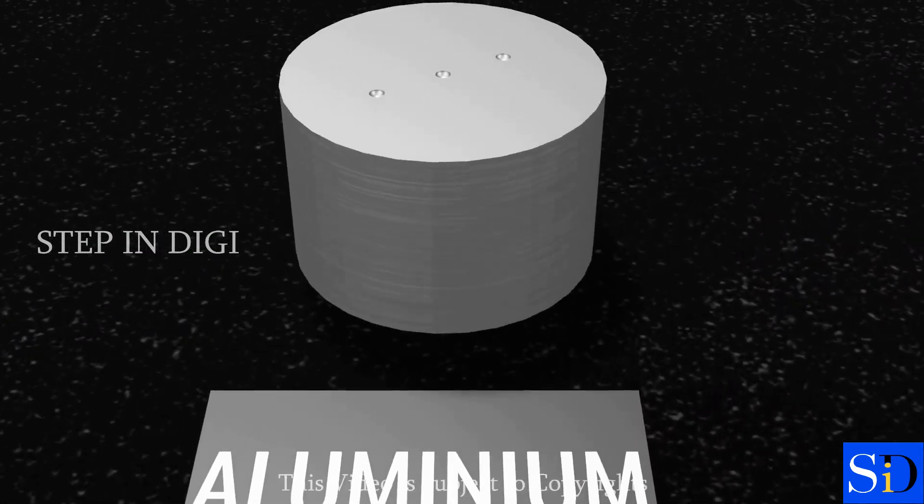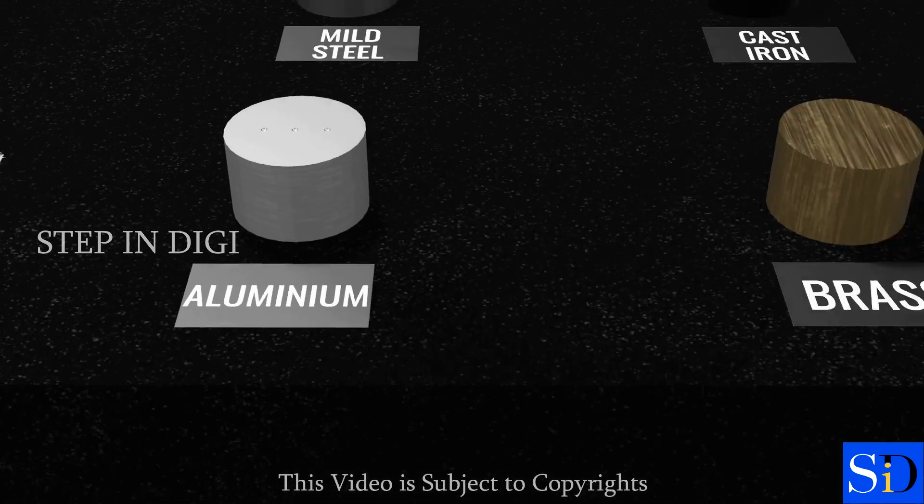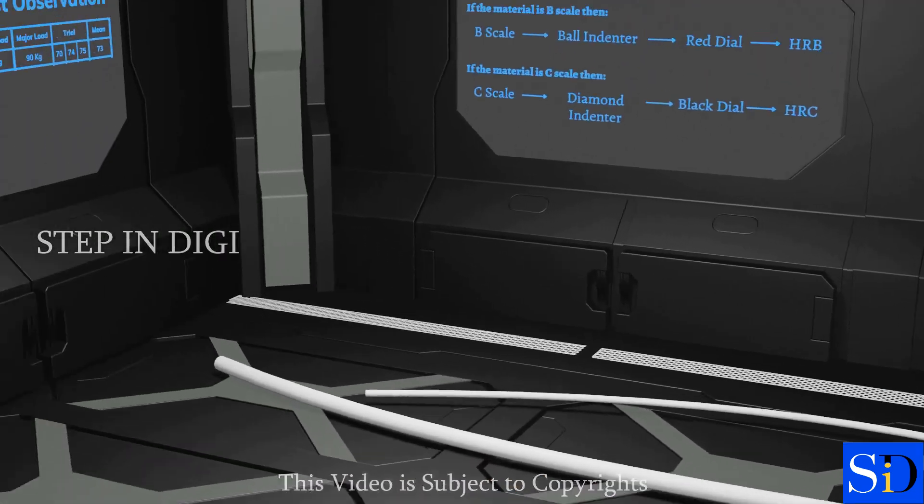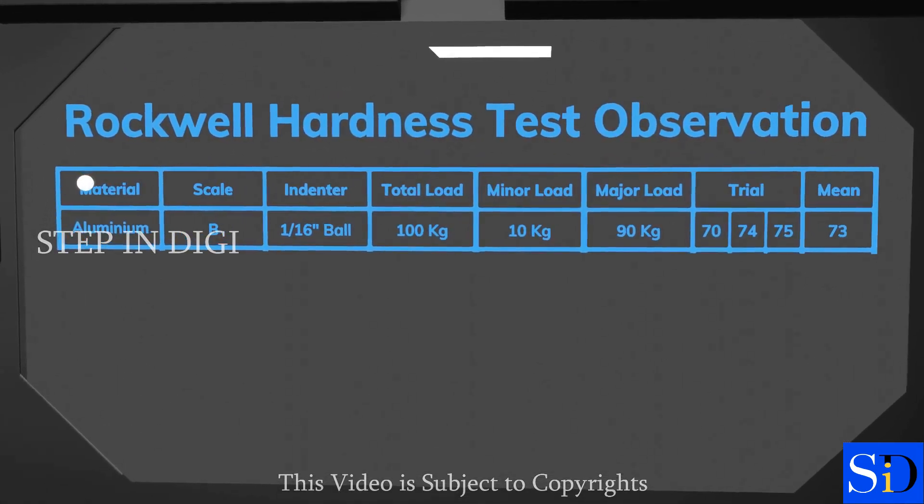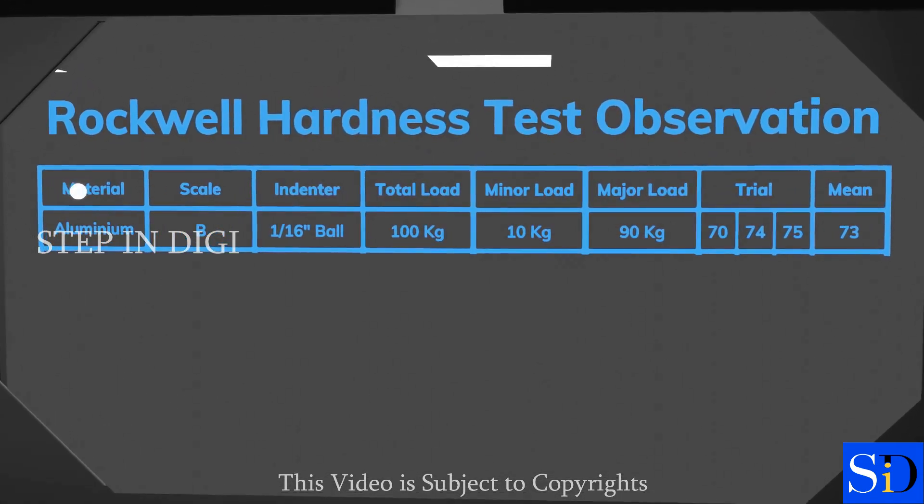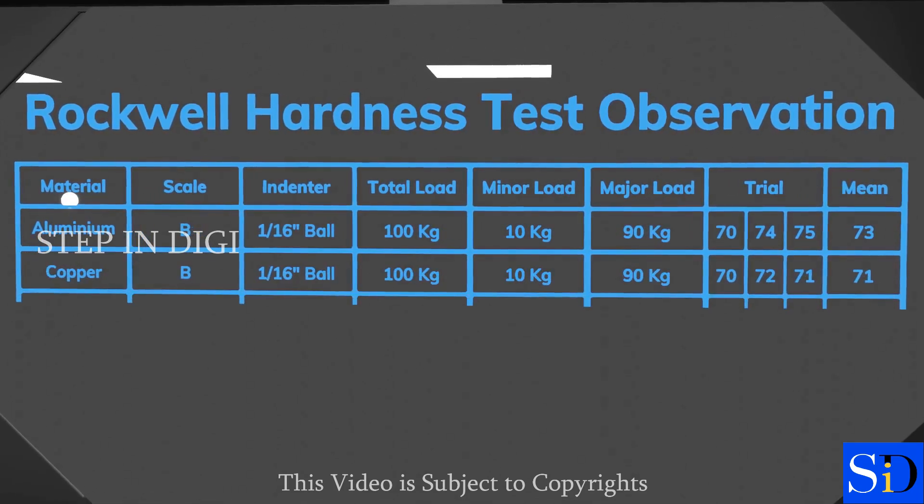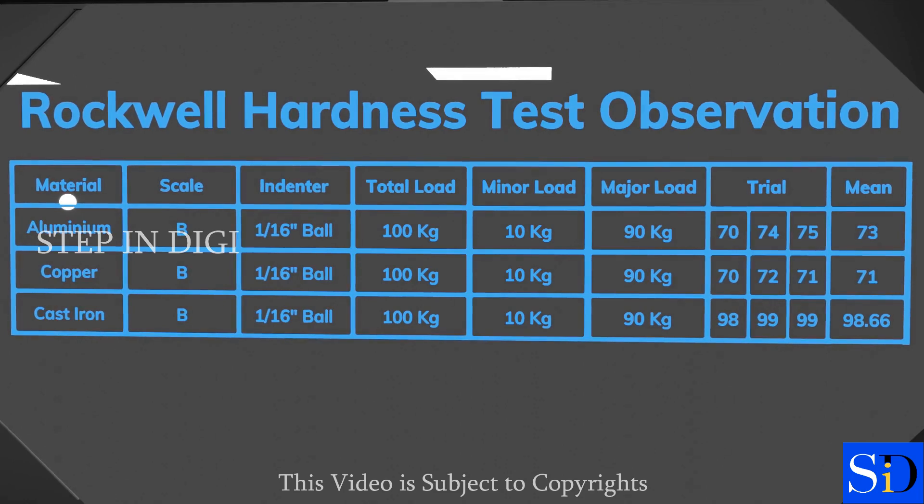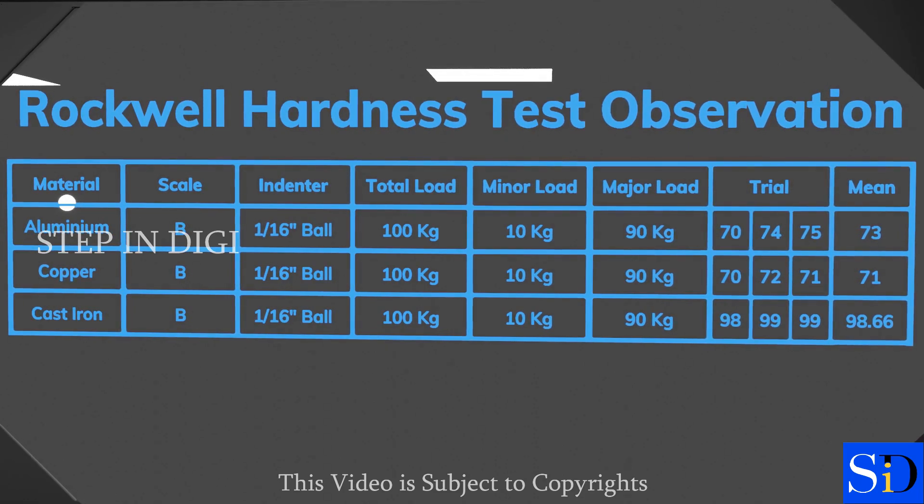Now, we can clearly see the indentation formed on the surface of the test piece. The values we got during indentation are taken, and mean value is found out to be 73 for Aluminium. Similarly using ball indenter, we found out the mean hardness value of copper and cast iron, were 71 and 98.66 respectively.